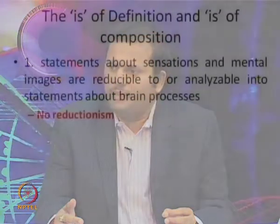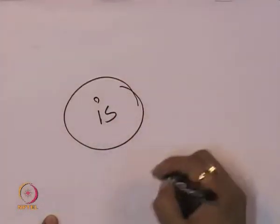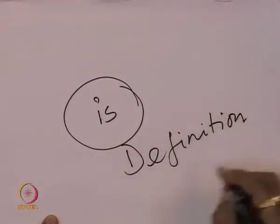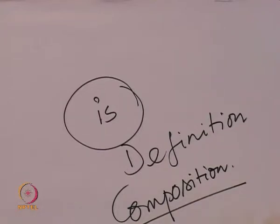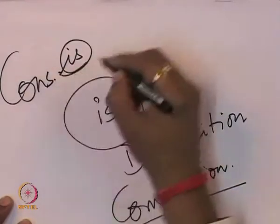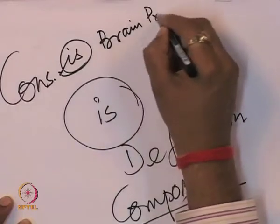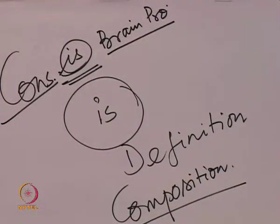We need to reflect on how Place goes about this hypothesis. Look at the definition of Place: Place's notion of 'is' here is something very important. 'Is' here is used either in the sense of definition or in the sense of composition. There are two senses in which we can talk about the notion of 'is' in the statement 'consciousness is brain process.' In what sense is this 'is' being used? That is what we need to look at.